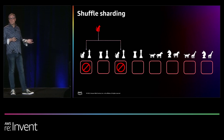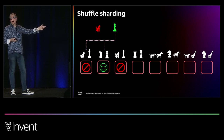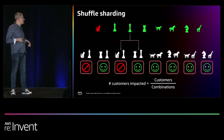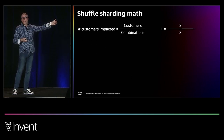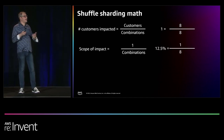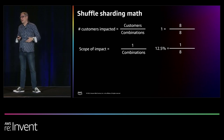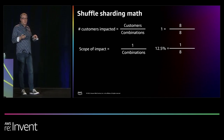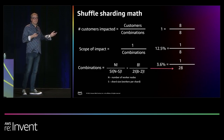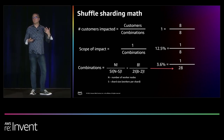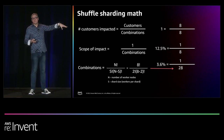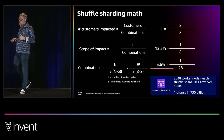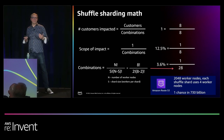In shuffle sharding, the cat does its thing and kills its two workers. Even though the rook was sharing one worker with the cat, it still has a healthy second worker — its own unique pair. Same for the bishop and everybody else. The number of customers impacted is customers divided by combinations. With eight customers and eight shuffle shards, only one customer is affected — a scope of impact of 12.5%. But it gets better: with eight workers choosing combinations of two (eight choose two), you can actually make 28 combinations, so the actual scope of impact is much less. With 2,000 workers making shards of four, your scope of impact is one in 730 billion.